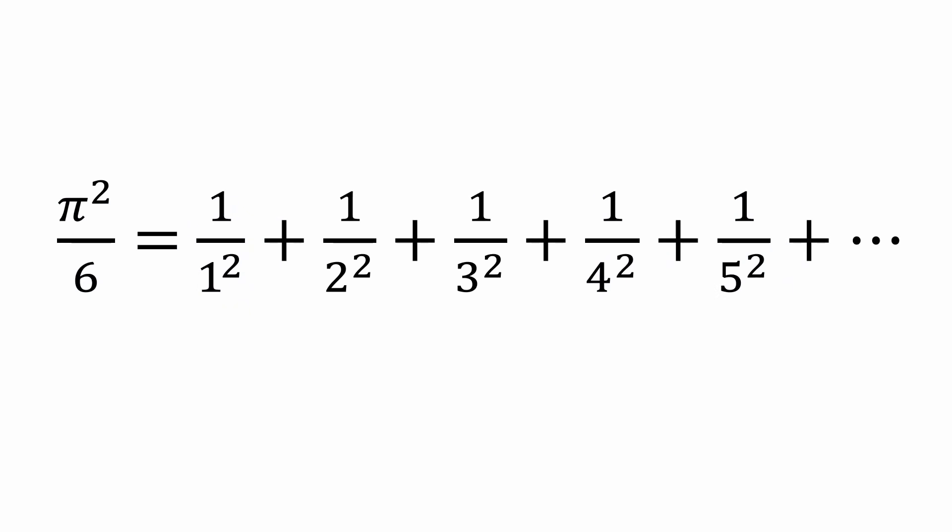Ah, yes, the famous Basel problem, first proved by Leonard Euler in 1734. Its solution never ceases to amaze. The sum of the reciprocals of the squares of all the natural numbers from 1 to infinity magically conspire to equal pi squared over 6.